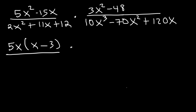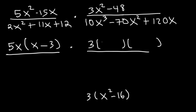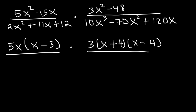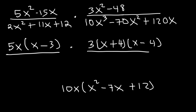For 3x² minus 48, take out a 3, giving 3(x² − 16). Factor that using difference of squares: the square root of 16 is 4, so we get (x + 4)(x − 4). For 10x³ minus 70x² plus 120x, take out the GCF of 10x, leaving x² − 7x + 12. Two numbers that multiply to 12 but add to negative 7 are negative 3 and negative 4, so this factors as (x − 3)(x − 4).